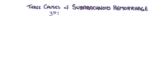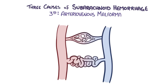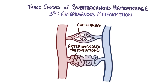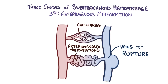The third cause of a subarachnoid hemorrhage is an arteriovenous malformation. Normally, arteries and veins are connected by small, leaky blood vessels called capillaries, but in arteriovenous malformations they are replaced with abnormally formed tangled blood vessels, characterized by at least one direct connection between the artery and the vein. Over time, these abnormal vessels can dilate, and since veins aren't used to dealing with high arterial pressures, they can rupture causing a subarachnoid hemorrhage.